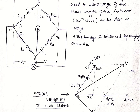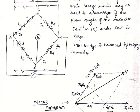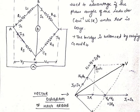For I1: I1·R1 and, 90 degrees apart from it, I1·ωL1. The resultant of I1·R1 and I1·ωL1 gives us V1. We know that V1 equals V3, so V1 = V3 = I3·R3.